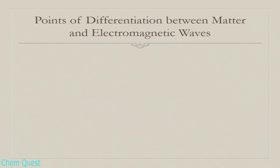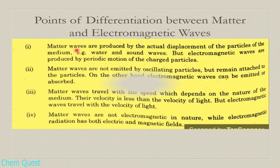The first point of difference: matter waves are produced by the actual displacement of particles of a medium — for example, water waves and sound waves. Electromagnetic waves, on the other hand, are produced by the periodic motion of charged particles.